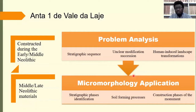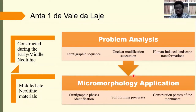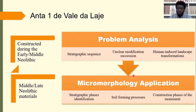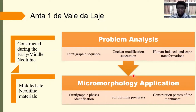For the micromorphology application itself, we had a few problem analyses. The first has to do with stratigraphic sequence — there were issues of unclear modification succession. We also had issues around human-induced landscape transformations. What micromorphology would contribute included stratigraphic facies identification, identifying soil-forming processes, and determining whether the monument was constructed in a single period or in more than one phase.